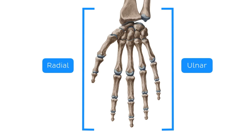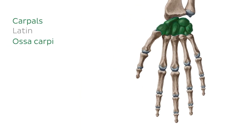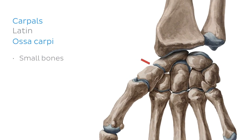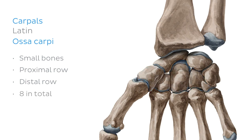Now that we know what we're looking at, we can delve into the bones themselves. As we mentioned earlier, the carpals are a group of eight bones located at the proximal aspect of the hand. This cluster of small bones can be delineated into two rows — one proximal and the other distal. Grouping them off like this may make it easier to study them.